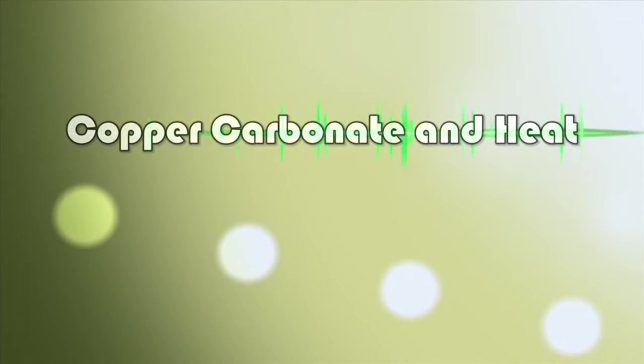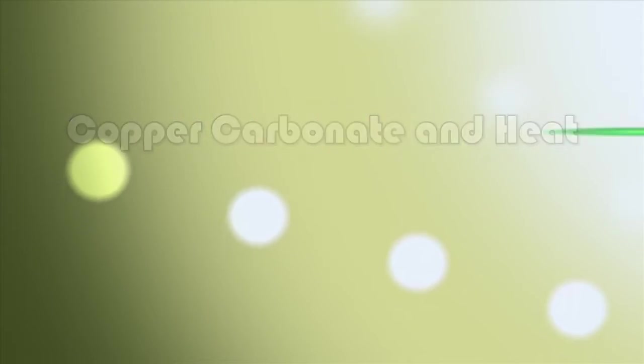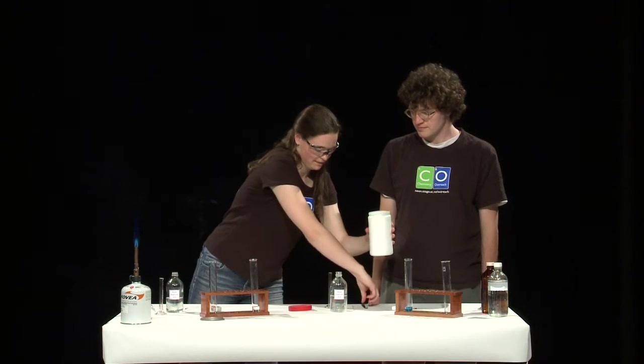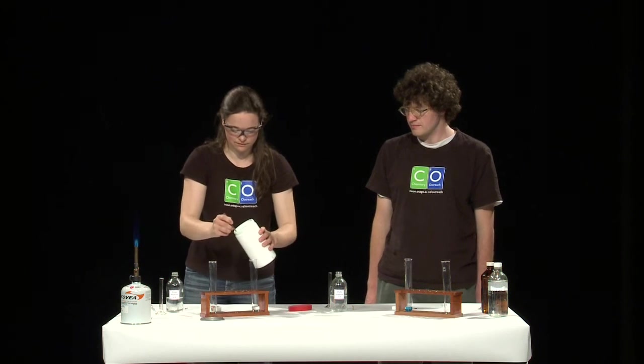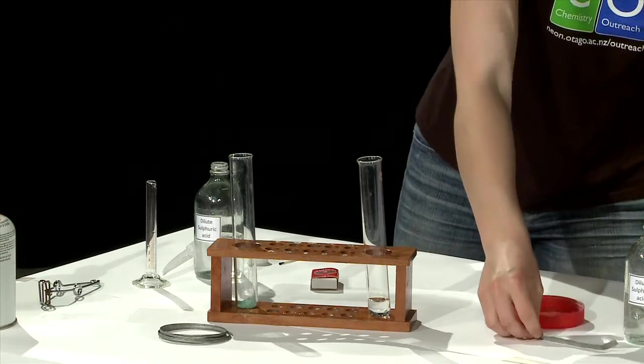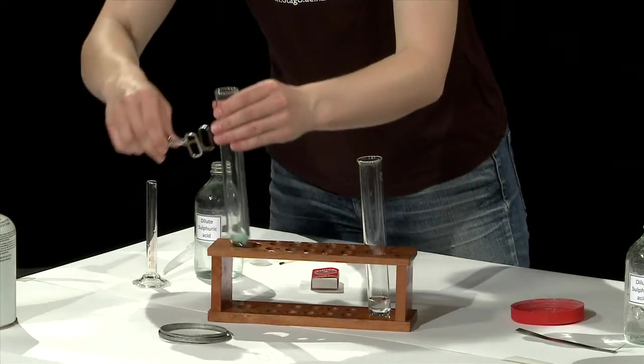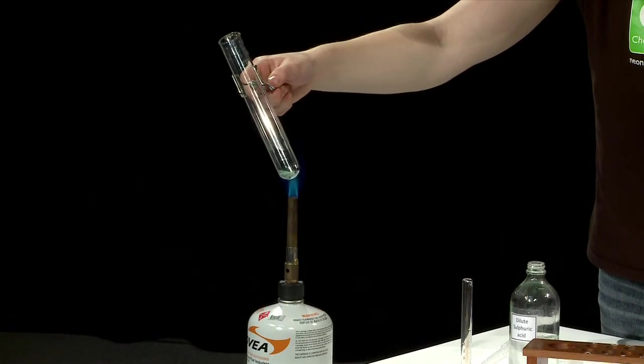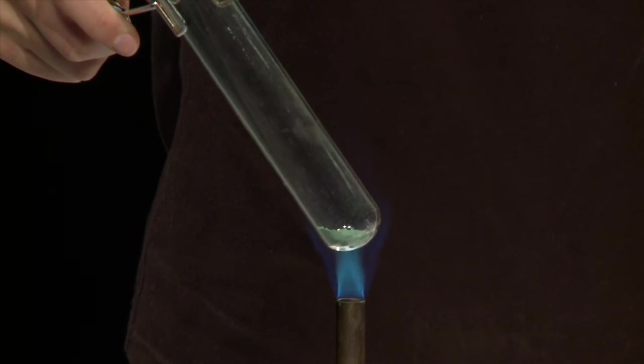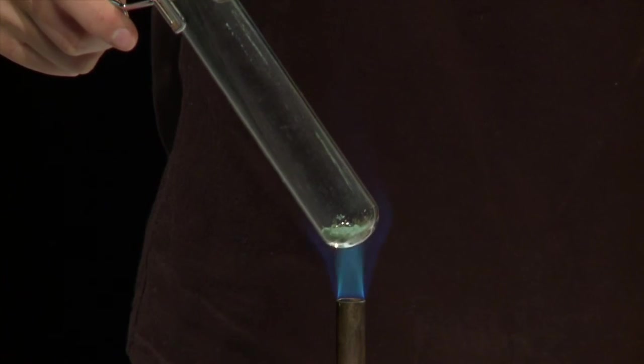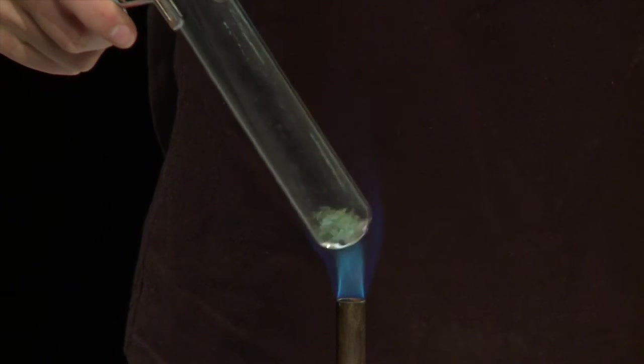Experiment 3. Take a spatula load of copper carbonate and add it to a boiling tube. Heat the copper carbonate with a burner. Be careful around the open flame and make sure the tube isn't pointing towards anybody. Watch carefully and record down any observations you make.